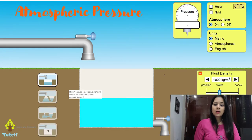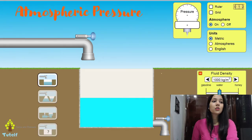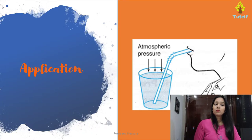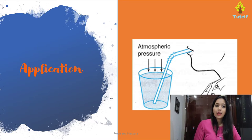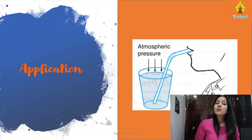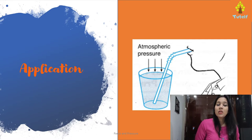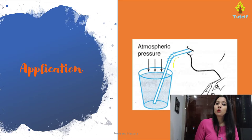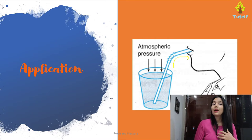We have already done this simulation. Next are the applications of atmospheric pressure — in your grade, the calculation part is not required. Let's see where atmospheric pressure is applied. When you are drinking water through a straw, the liquid comes up through the straw. How does this liquid come up?